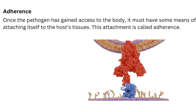Adherence. Once the pathogen has gained access to the body, it must have some means of attaching itself to host tissue. This attachment is called adherence. As you can see in this diagram, there is a visual representation of the host cell receptors and the glycoproteins of the virus. The blue color indicates the host cell receptors, and the red indicates the glycoproteins of the virus, which attach to the host receptor to gain access into the host cells.